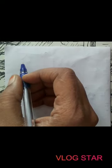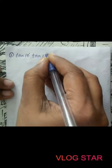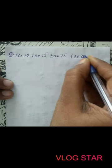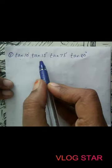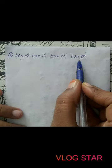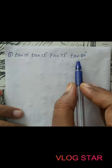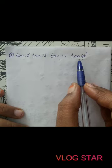Now, we will do the sums based on the complementary angle. The first sum is the product tan(10°) · tan(15°) · tan(75°) · tan(80°). When you have the same trigonometric function, we group pairs whose angles sum to 90 degrees, since that is the complementary condition.